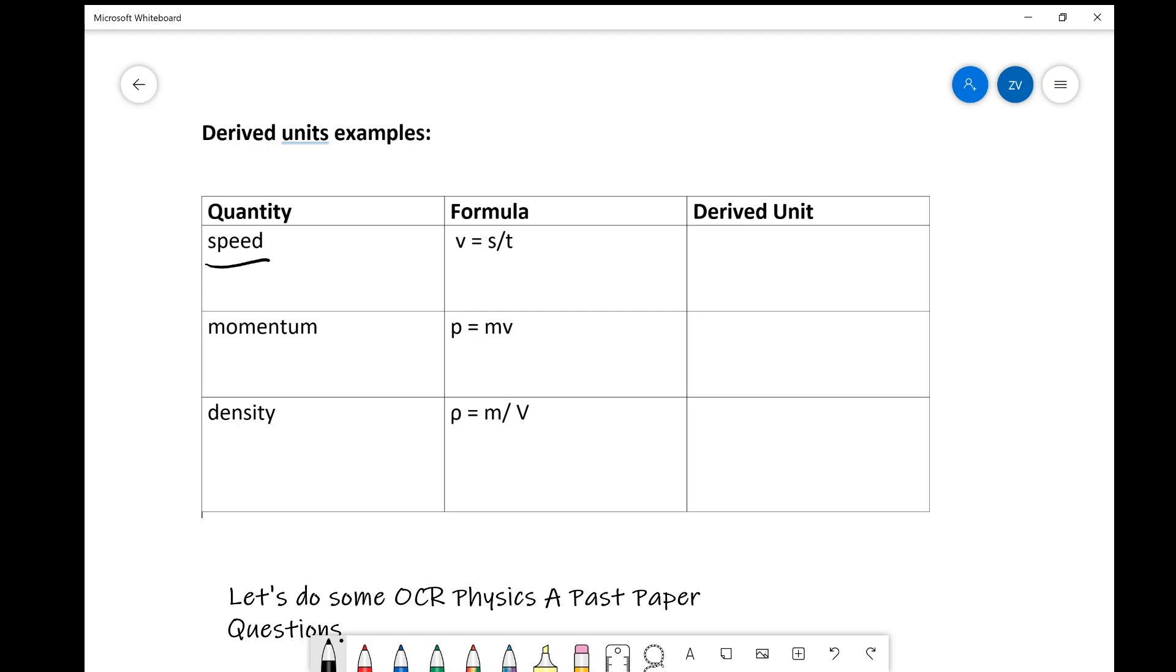As we know, the formula for speed is v equals s over t, where v is the speed, s is the distance traveled and t is the time. Important to know that of course this is the formula for average speed only. Well the derived unit in this case is going to be meters divided by seconds or meters per second. That's because the unit of s is m and the unit of t or time is just s. So hence the derived unit is meters per second.